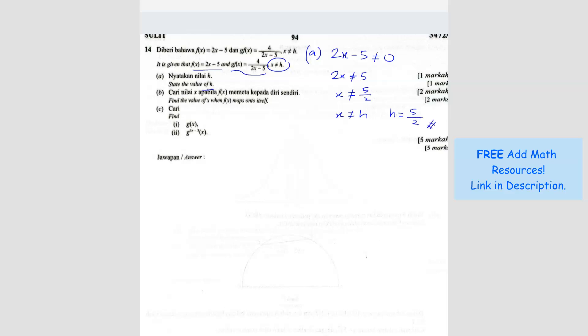Question B: Find the value of x when f(x) maps onto itself. When you see f(x) maps onto itself, meaning f(x) equals to x. So what is f(x)? 2x minus 5 equals to x. So rearrange this, I will get 2x minus x, so it's just x equals to 5. Done.